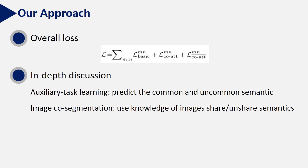The final loss of our model is a combination of the previous three losses. After introducing our co-attention classifier, let's have an in-depth thinking. From our opinion, our method can be viewed from the perspective of auxiliary task learning. We create two tasks: predict the common and non-common semantics. We can also see our method from the point of image co-segmentation. We use the knowledge of images, shared or unique semantics to provide more supervision.